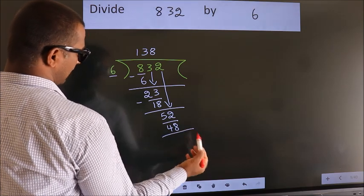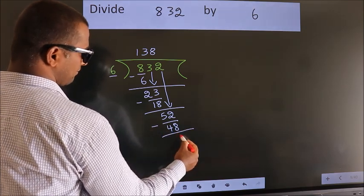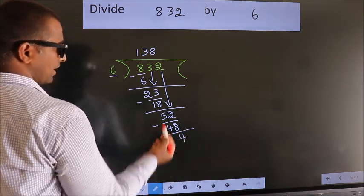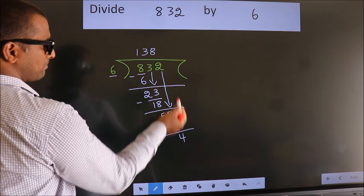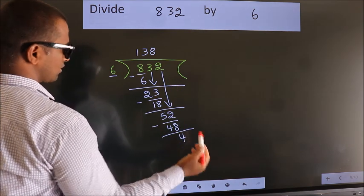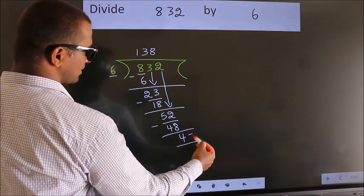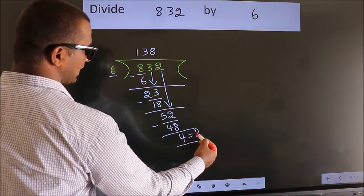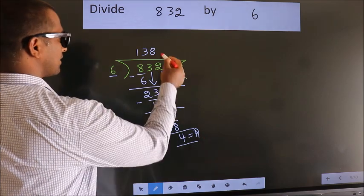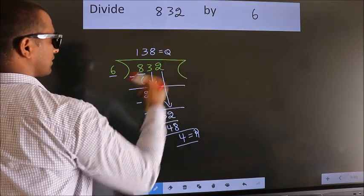Now we subtract. We get 4. No more numbers to bring down, so we stop here. This is our remainder. This is our quotient. Thank you.